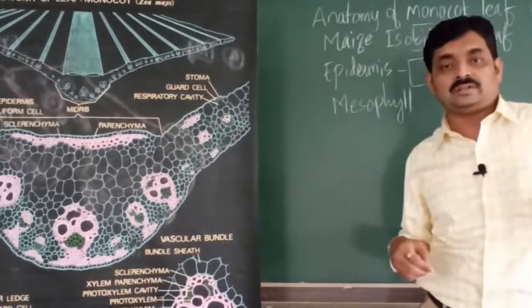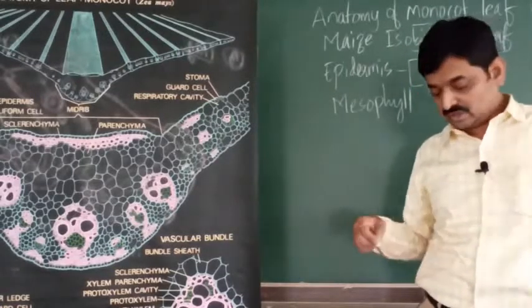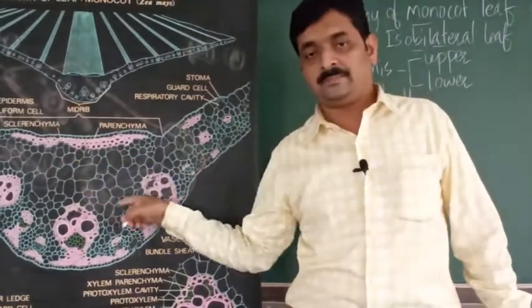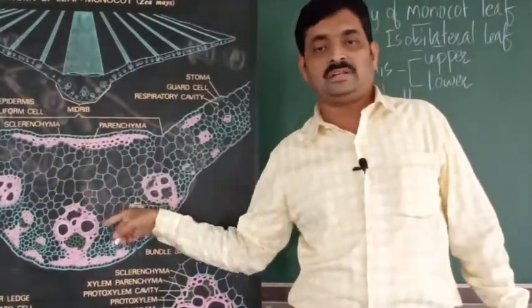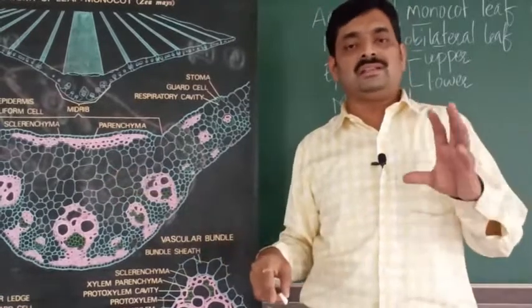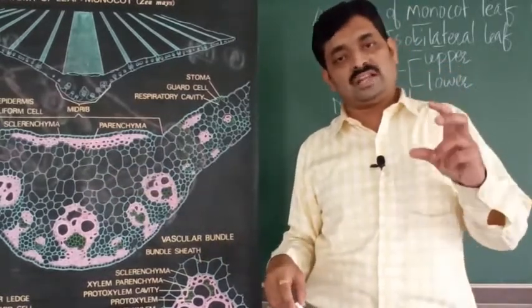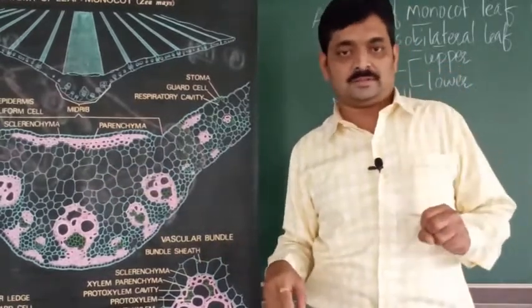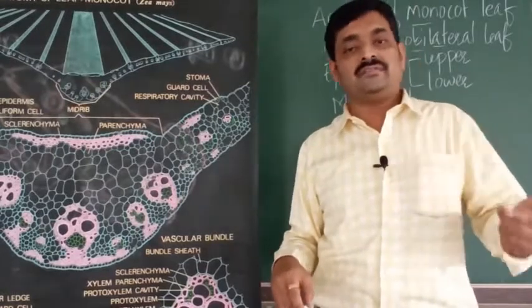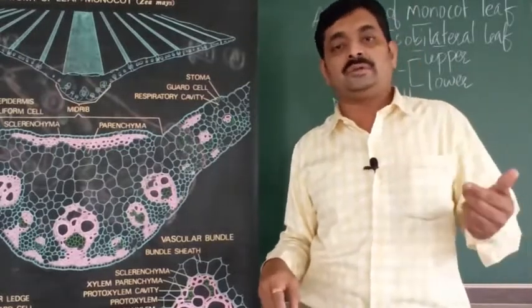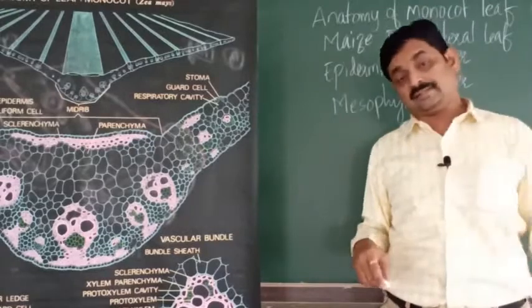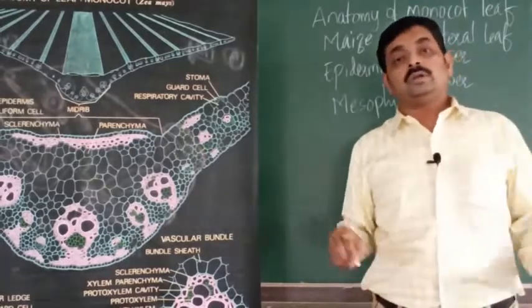In monocot leaf mesophyll, you will find only one type of cells. Mesophyll is composed of one type of cells, so we say mesophyll is not differentiated into palisade and spongy cells.